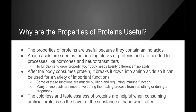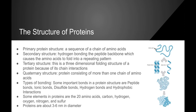The colorlessness and tastelessness of proteins are helpful when consuming artificial proteins, so the flavor of the substance at hand won't be altered. Regarding the structure of proteins: the primary protein structure is a sequence of a chain of amino acids. The secondary structure involves hydrogen bonding of the peptide backbone, which causes the amino acids to fold into a repeating pattern. The tertiary structure is a three-dimensional folding structure of a protein formed from its chain of amino acids.